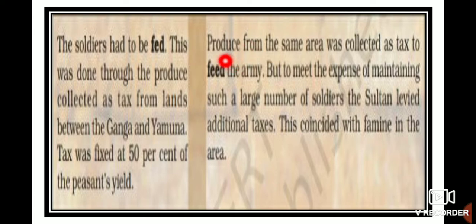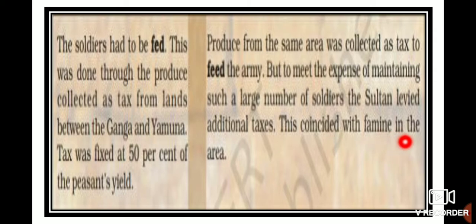Muhammad Tughlaq also collected produce from the same Ganga-Yamuna area as tax to feed his army. But to meet the expenses of maintaining such a large army, the Sultan levied additional taxes. This coincided with a famine in the area. Alauddin Khilji was wise and did not overburden peasants, but Muhammad Tughlaq increased revenue demands, which led to famine and food shortages.